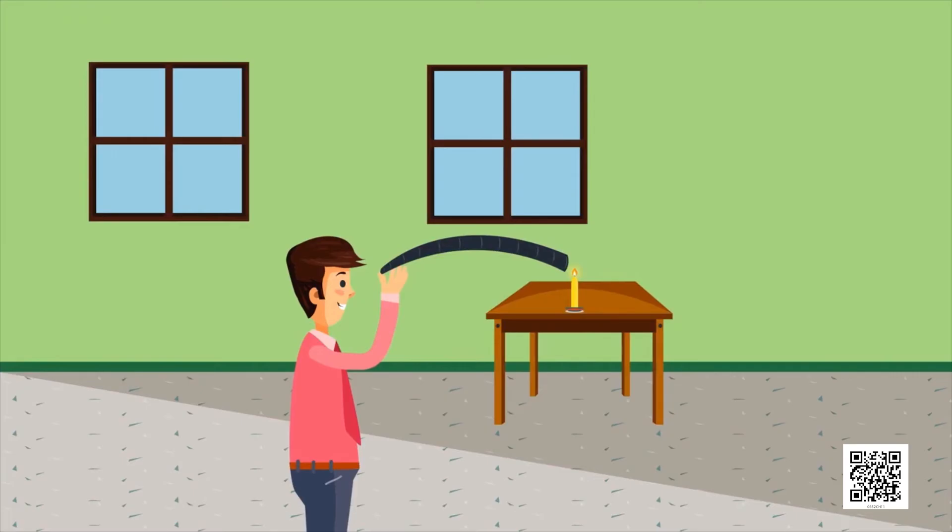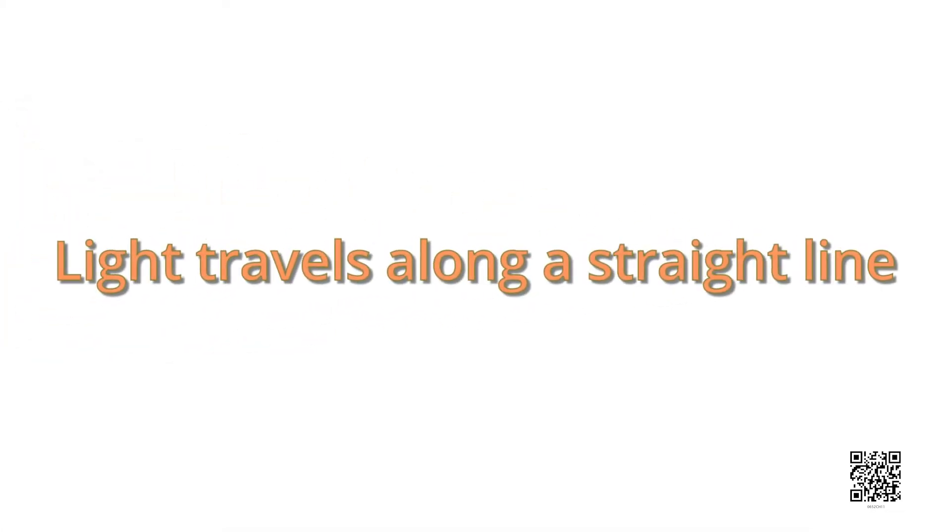Turn the pipe a little to your left or right. Can you see the candle now? What do you conclude from this? This suggests that light travels along a straight line.